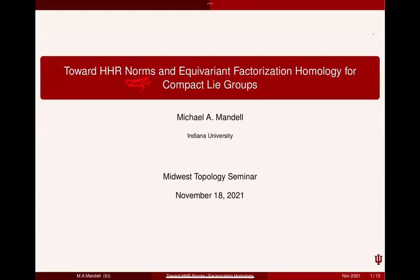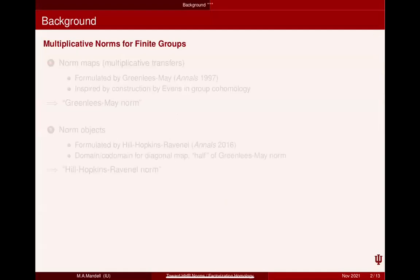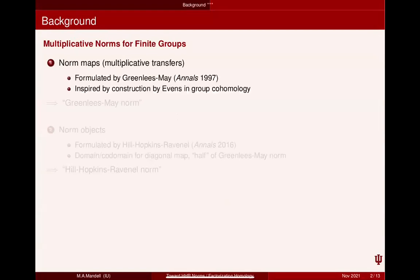I'm not going to assume any familiarity with the concept of norm, and I'm going to start with the background. In most other contexts when people say the word 'norm,' it's some kind of map. The related kind of map to what I'm talking about today are norm maps, also called multiplicative transfers, formulated by Greenlees-May in a 1997 Annals paper inspired by a construction of Evens in group cohomology.